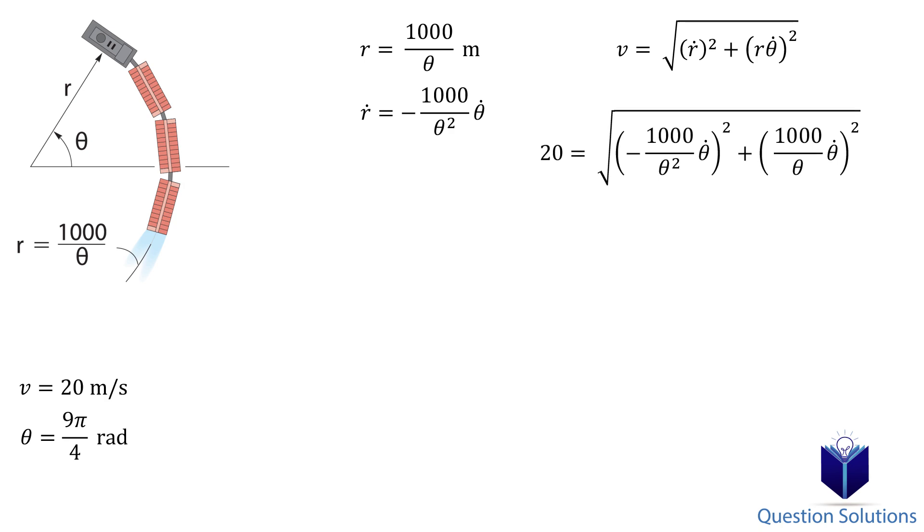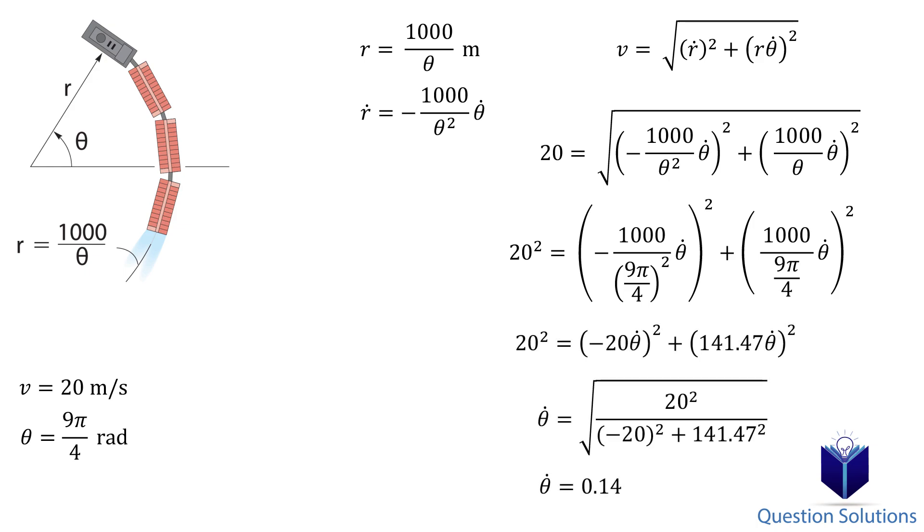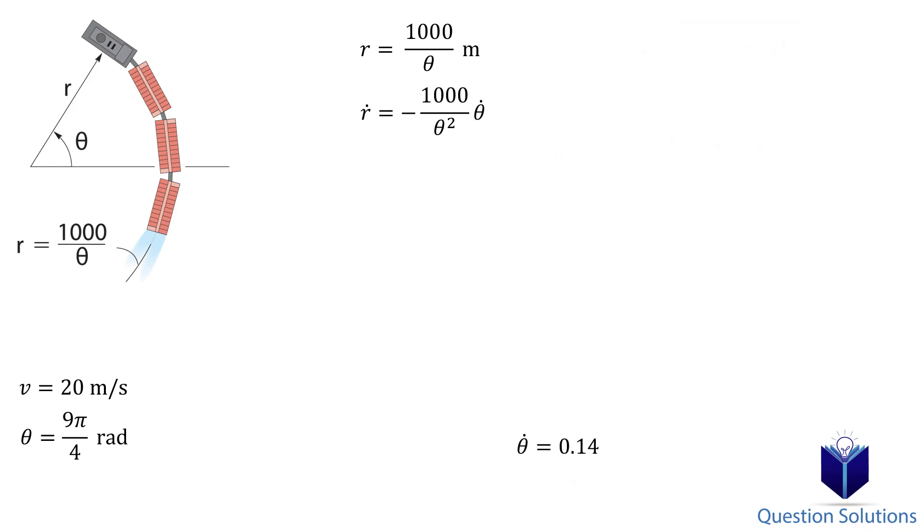What we want to do is isolate for the angular velocity. Now we can figure out the components of velocity when theta equals 9π over 4. First, the radial component.